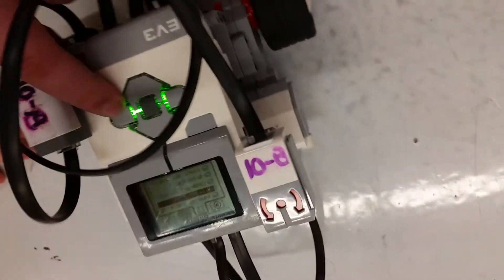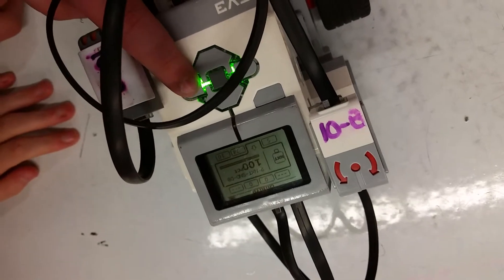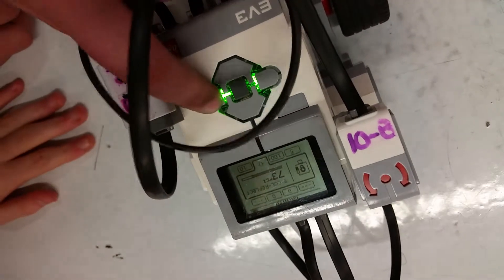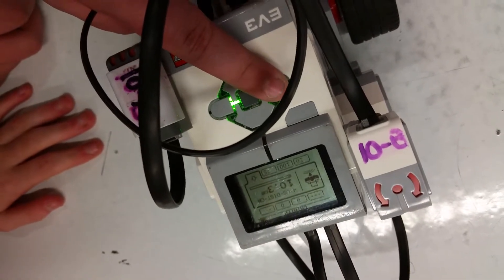We're at the port view. All right, and go to your gyro sensor. Now it's on motors, so keep going backwards.